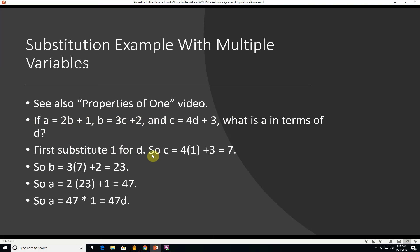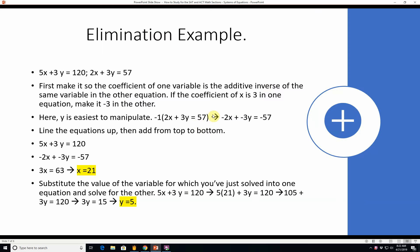If they don't give you values for the variables you might as well take the smallest one and just make it 1 because 1 is easy to work with. So c is equal to 4 times 1 plus 3 so that's 7. So b is equal to 3 times 7 plus 2 which is 23. So a is equal to 2 times 23 plus 1 which is 47. Since we set d equal to 1 that means a is equal to 47d.